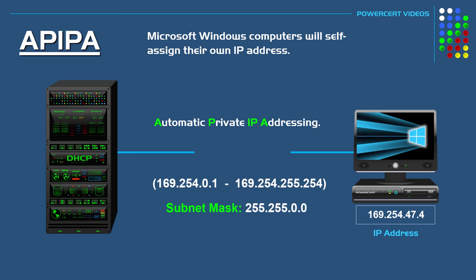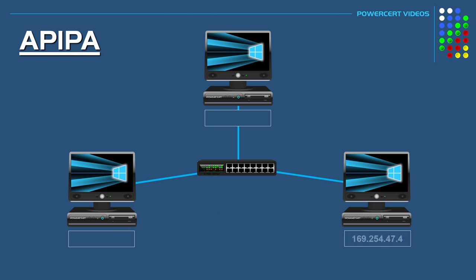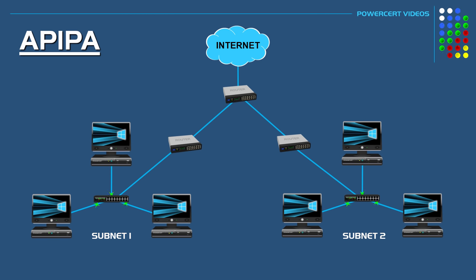In addition, the computers also assign themselves a 16-bit subnet mask. The reason computers do this is that even though they cannot get an IP address from a DHCP server, they will still be able to communicate with other computers on the same local network — specifically on the same subnet — that also have self-assigned IP addresses. However, the computers will not be able to access the internet or devices on a different subnet with this type of IP address.